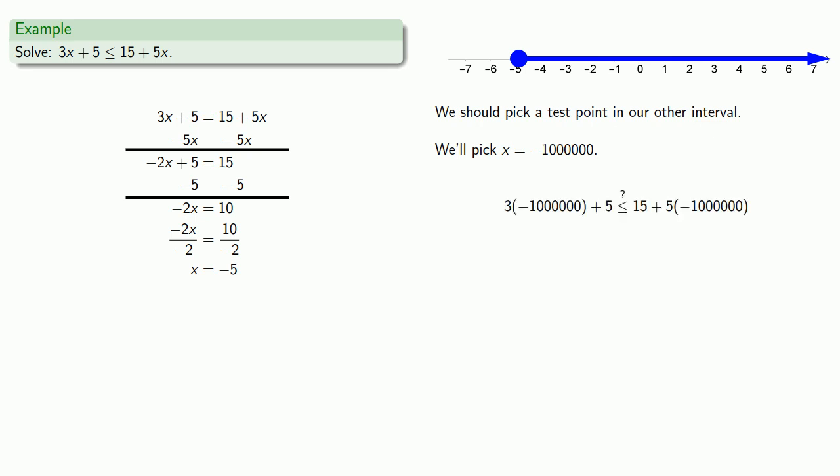And so over on the left hand side we have minus 3 million plus 5. While over on the right hand side we have 15 minus 5 million. And we want to know whether the inequality is satisfied. The thing that's useful is that minus 3 million plus 5 is pretty close to minus 3 million. And it's as if we could ignore this plus 5 as not being that important.